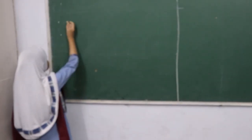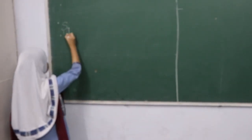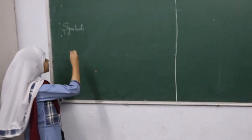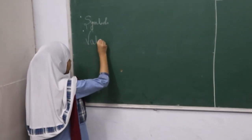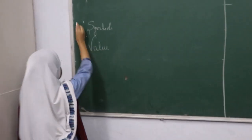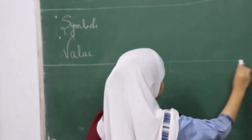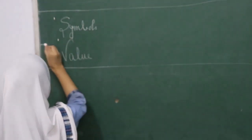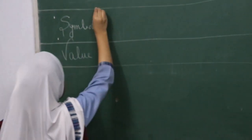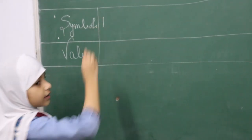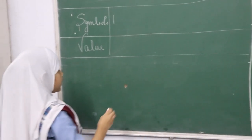There are seven basic symbols to write any Roman numbers. Our first symbol is I, which has a Hindu-Arabic value of 1.